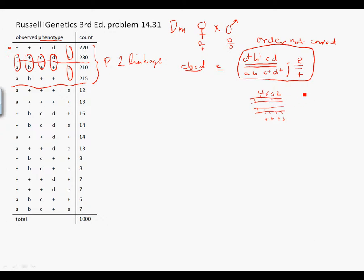If there's no crossing over, I would get parental W, X, Y, Z and plus, plus, plus, plus. But if there's crossing over one place, let's say between W and X in this case, then I would expect to get W plus, plus, plus and plus X, Y, Z as the phenotypes.